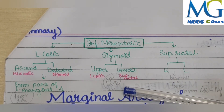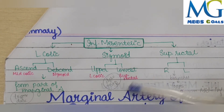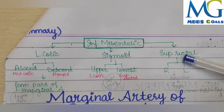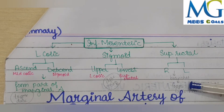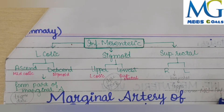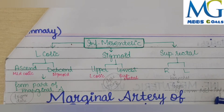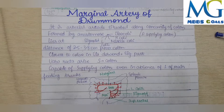In summary, the branches include supply to the descending colon and sigmoid colon. The superior rectal artery divides into right and left parts with branches forming a loop anastomosing with the inferior rectal arteries. Now we will learn about the anastomoses.